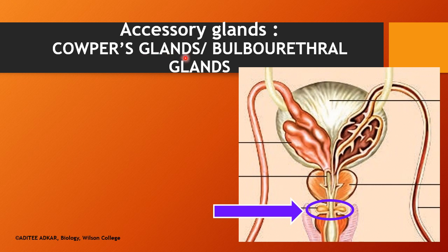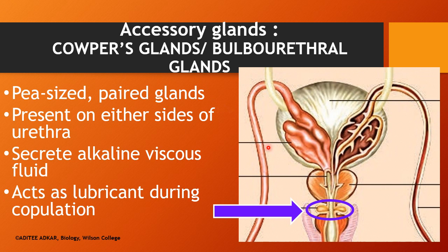Coming to the Cowper's glands or the bulbo-urethral glands. The Cowper's glands are a pair of very small, almost pea-sized glands present on either side of the urethra. They open into the urethra and produce an alkaline viscous fluid which acts as a lubricant. They are called bulbo-urethral glands because of their bulbous shape and their opening into the urethra.